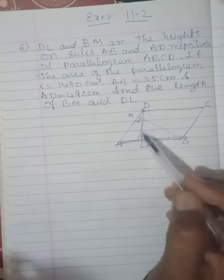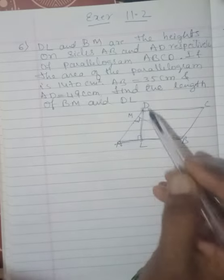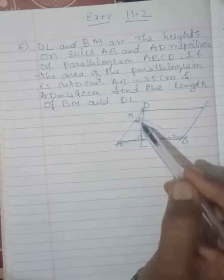So AB is the base and DL is the height. Then here what happens? AD, and for AD, BM is the height. You can see that in the diagram this perpendicular sign shows it is height.